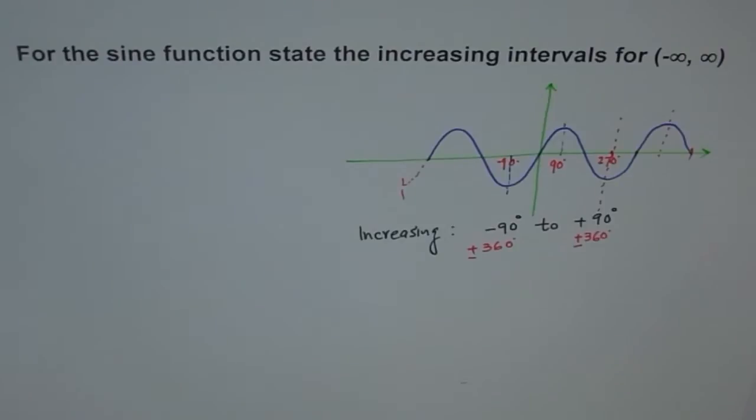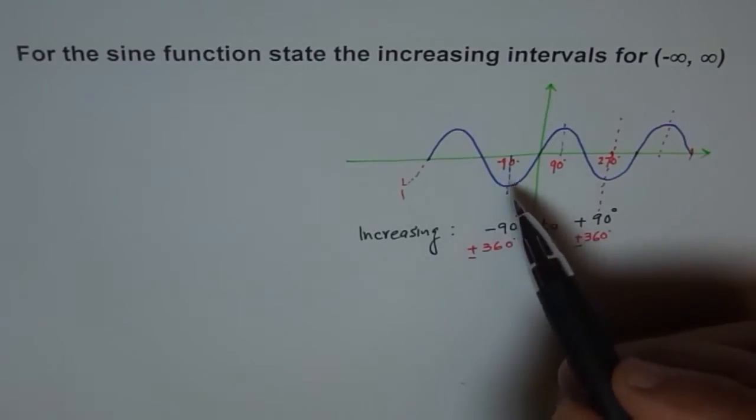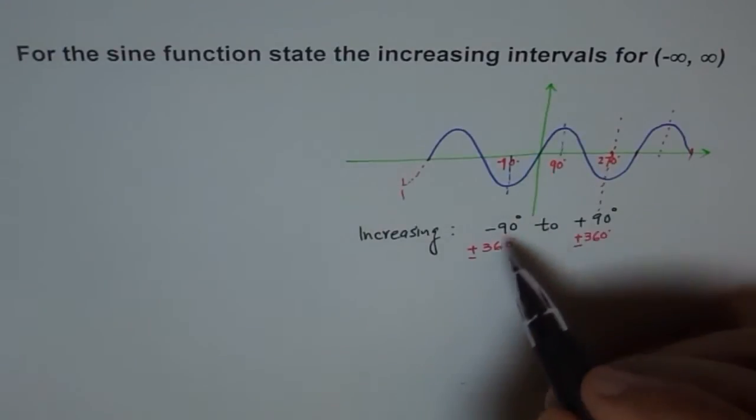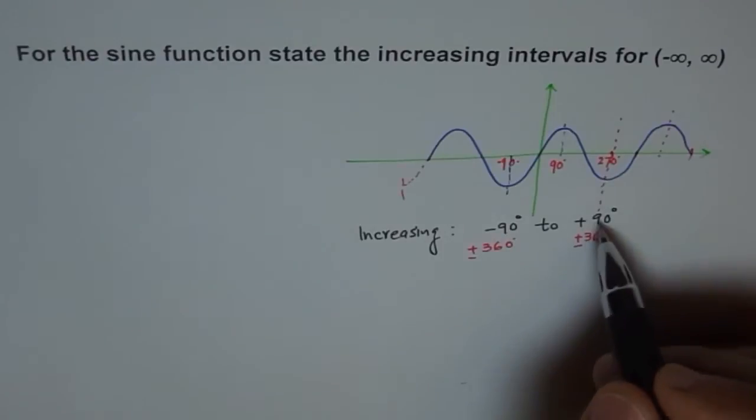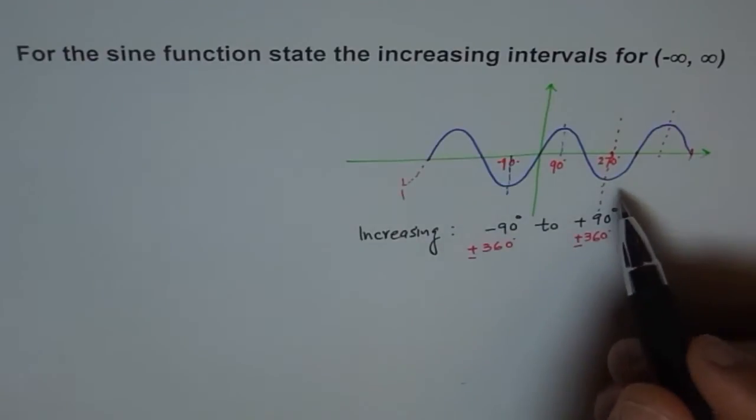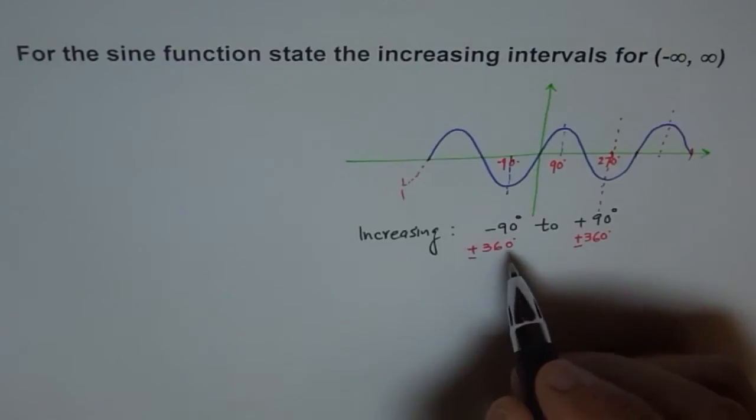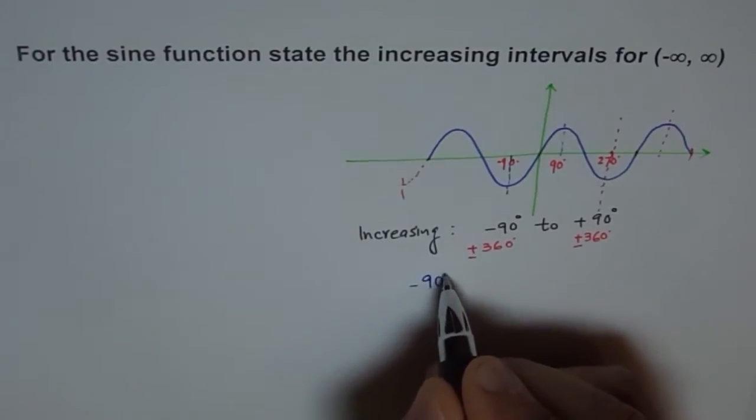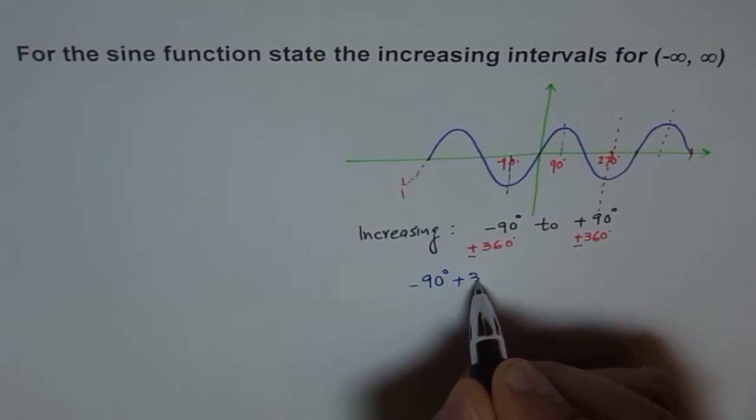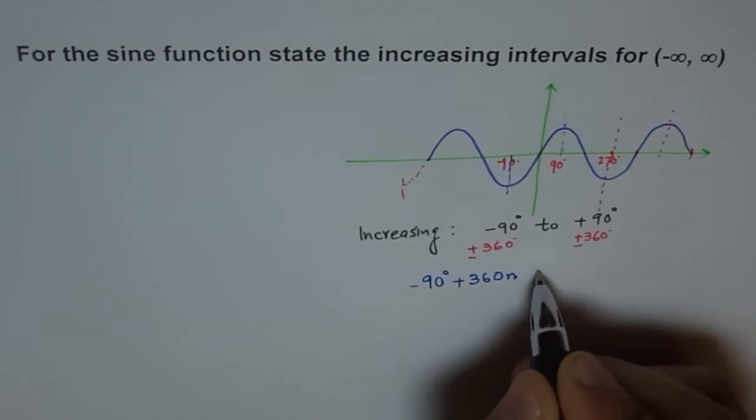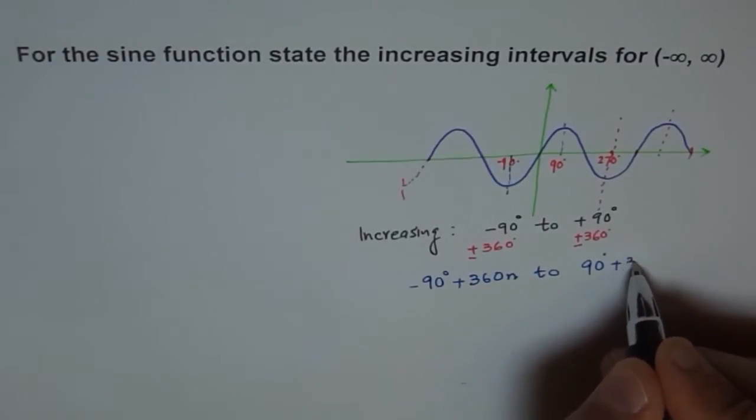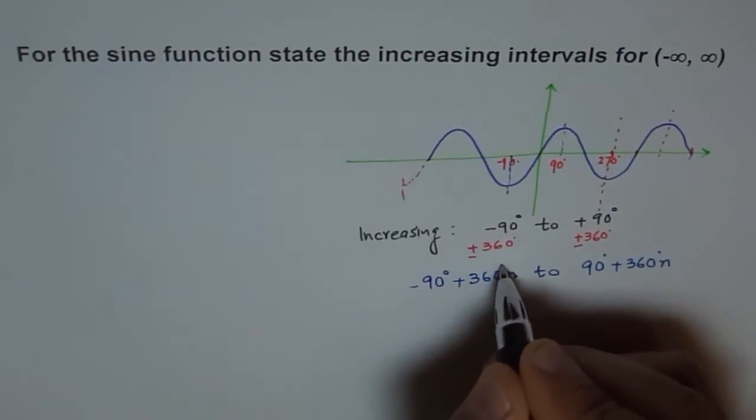So we can say that first it increases from minus 90 to plus 90, and then the next will be plus 360 degrees on both sides, and then next will be another 360 degrees. So it will be 360 degrees n times. So the increasing interval I can write as minus 90 degrees plus 360n to 90 degrees plus 360 degrees n.